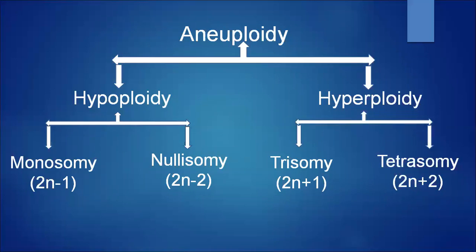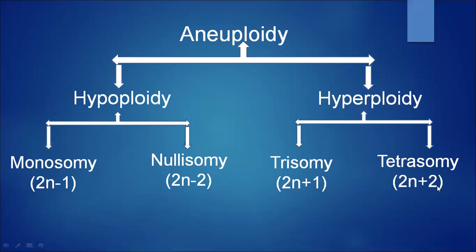Monosomy (2n−1): if a diploid is deficient by one chromosome from its normal complement, it is known as monosomic. Nullizomy (2n−2): if a pair of homologous chromosomes is lost from the normal complement, it is called nullizomic. Trisomy (2n+1): if an extra chromosome is added to the normal complement. Tetrasomy (2n+2): if a pair of homologous chromosomes is added to the normal complement.